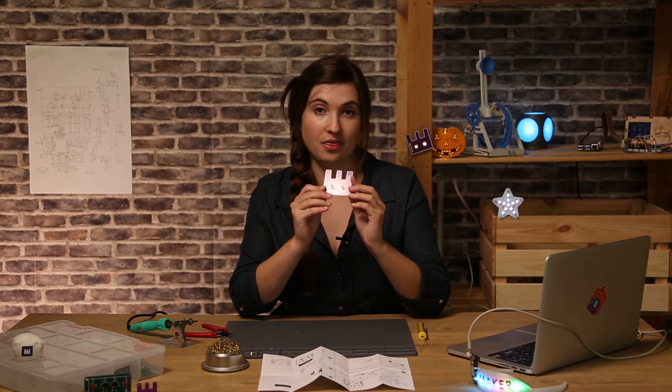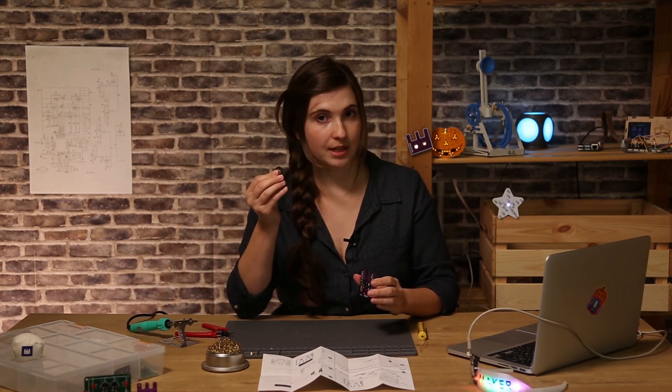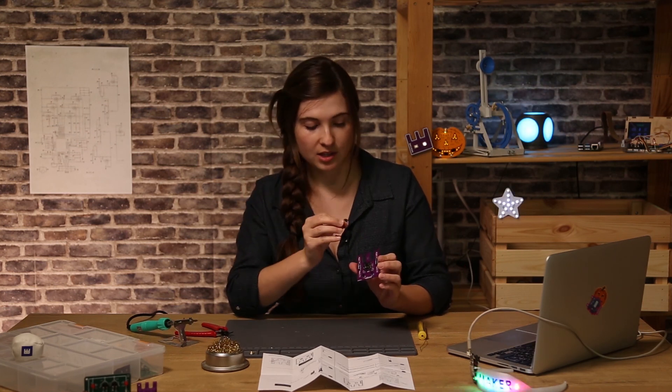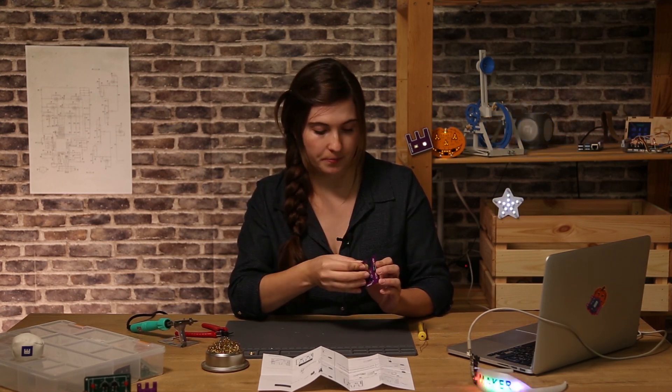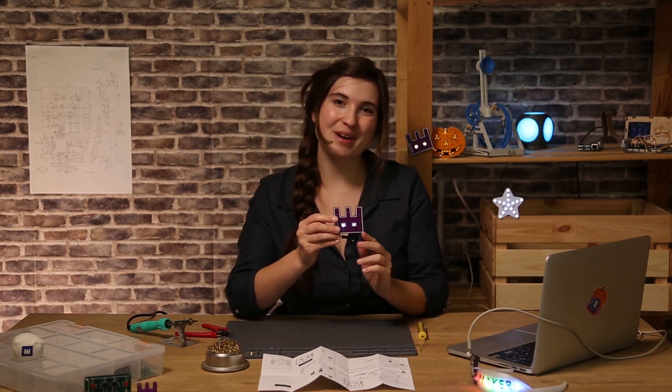Our soldering work is done. Now all we need to do is add the battery. It's a coin cell battery and we need to make sure that the negative side is positioned towards the PCB. There you go. Good job. Thanks for watching. Bye.